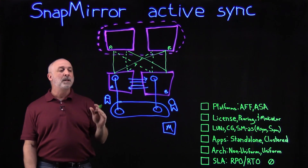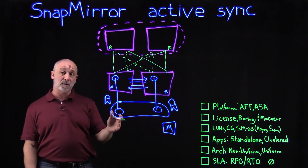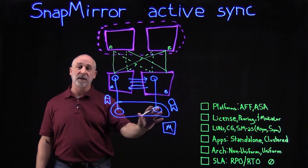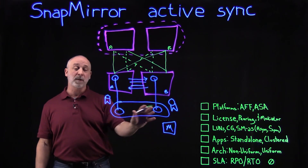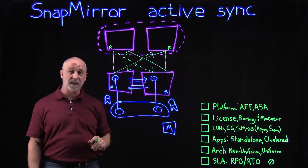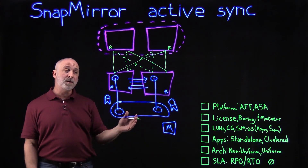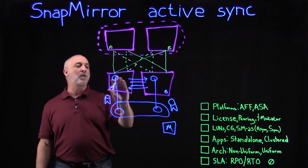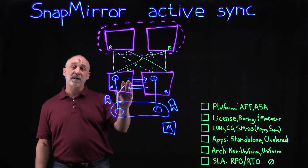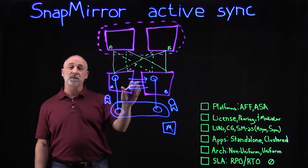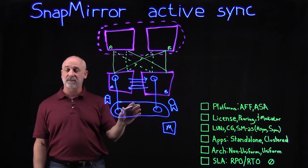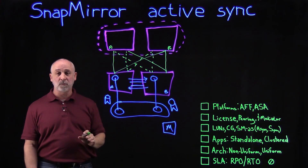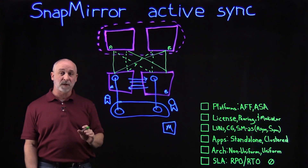With this deployment we have achieved RPO0 and RTO0. Our RPO0 is protected by our bi-directional synchronous replication, ensuring that every write is written to both sides before acknowledgement back to the host. Our RTO0 is achieved through our data being available across our clusters. In the event of outages, our clusters can communicate with the mediator to determine the state of things, and as long as our storage is healthy and in sync, our applications will continue to run and ensure business continuity for enterprises.